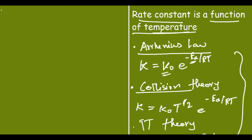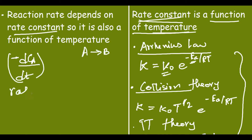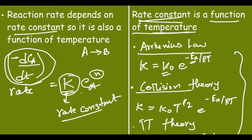The third is the transition state theory, which states k = k₀·T·e^(−Ea/RT). These are the three functional relationships showing how rate constant varies with temperature. The reaction rate is also a function of temperature, because −dCa/dt = k·Ca^n, and as k changes with temperature, the entire rate also changes.